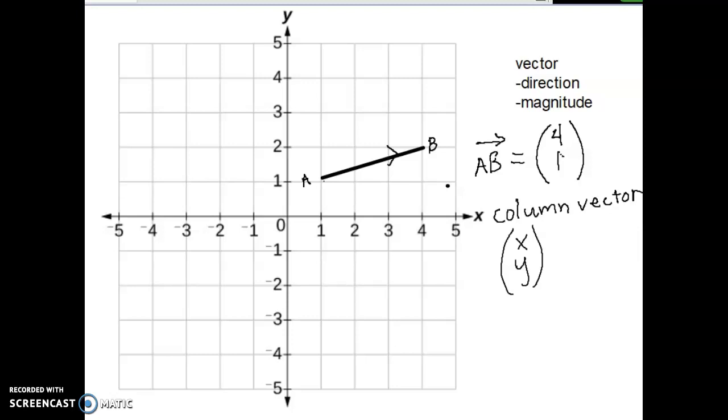So to find the direction of the vector AB, we write it as a column vector, which is in the positive direction on the x-axis four places, and then once in the y direction.